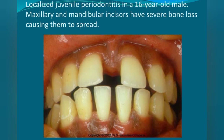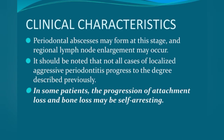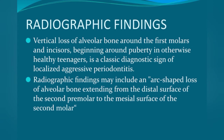In clinical photos, pathological migration of central incisors can be observed. Periodontal abscesses and regional lymph node enlargement may also be seen. It should be noted that not all cases of localized aggressive periodontitis progress to the described degree — not every patient will have tooth mobility, abscess, or pathological migration. In some patients, the progression of attachment loss and bone loss may be self-arresting, though this is rare; usually this type of periodontitis progresses very rapidly.